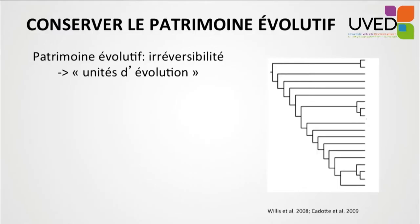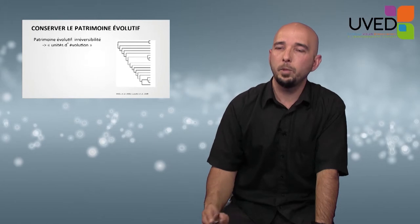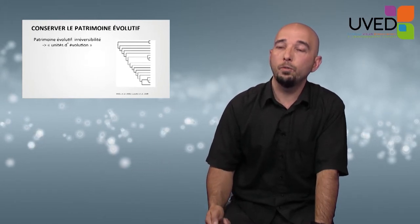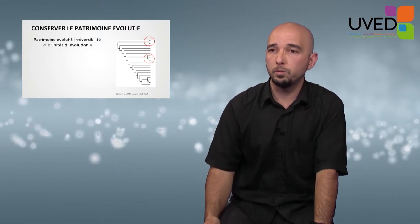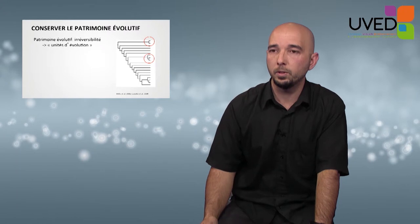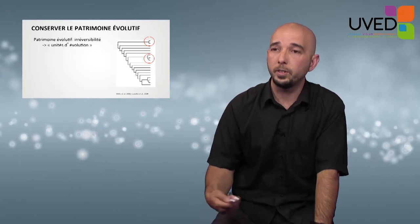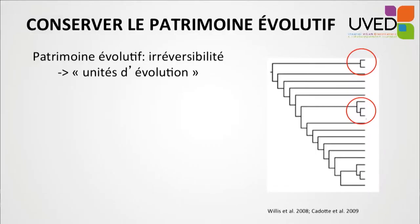The first level of response would consist of attempting to preserve the existing evolutionary heritage. The value we attribute to this heritage is linked with irreversibility — within a few decades, the loss will become irreversible. We need to define evolutionary units in the phylogeny of living beings: groups of organisms within and between species whose loss would be irreversible.